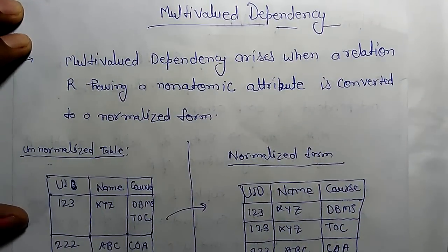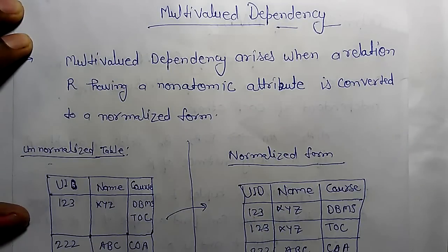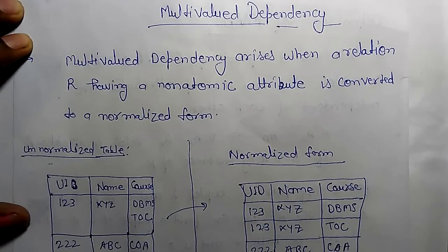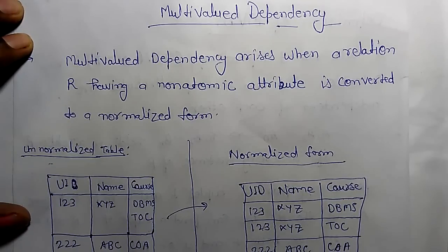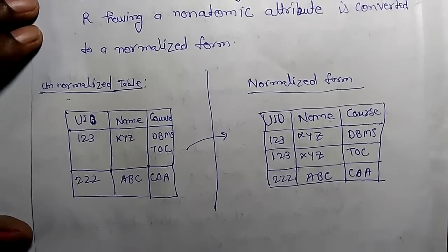Today we are going to learn multivalued dependency. Multivalued dependency arises when a relation R having a non-atomic attribute is converted to a normalized form.